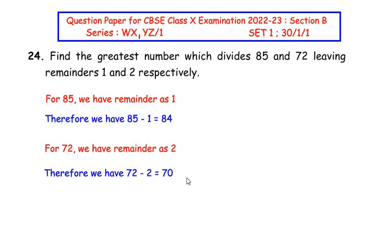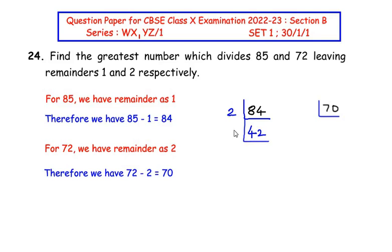Now I'll find the HCF independently using prime factorization. For 84, we divide using only prime numbers, starting with the smallest prime, 2. So 2 × 42 = 84. Then 42 = 7 × 6, and 6 = 2 × 3. So the prime factorization of 84 is 2 × 2 × 3 × 7. Remember, all factors must be prime numbers.